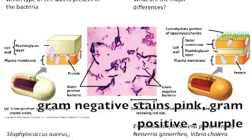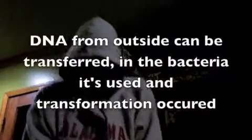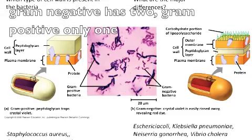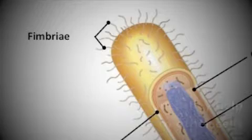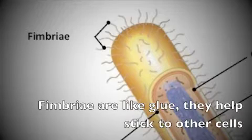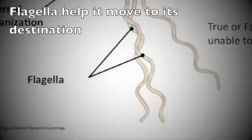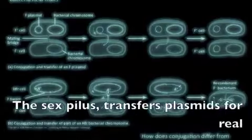Gram-negative staining pink, gram-positive is purple. Any DNA from outside can be transferred and the bacteria is used and transformations occur. Gram-negative has two, gram-positive only one phospholipid bilayer on the outside for protection. From rare light blue, they'll stick to other cells — flagella help it move to its destination.